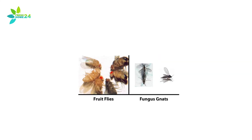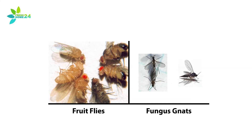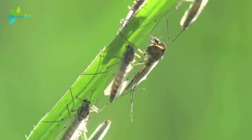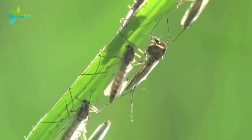They also differ in their life cycle. Fungus gnats have a life cycle of about four weeks, while fruit flies have a life cycle of 30 days but can survive for up to three months if conditions are right.